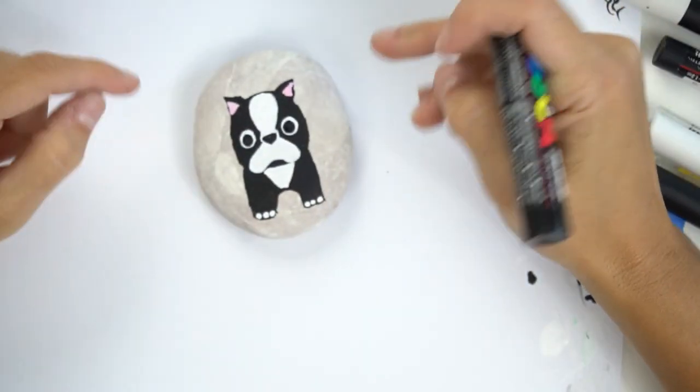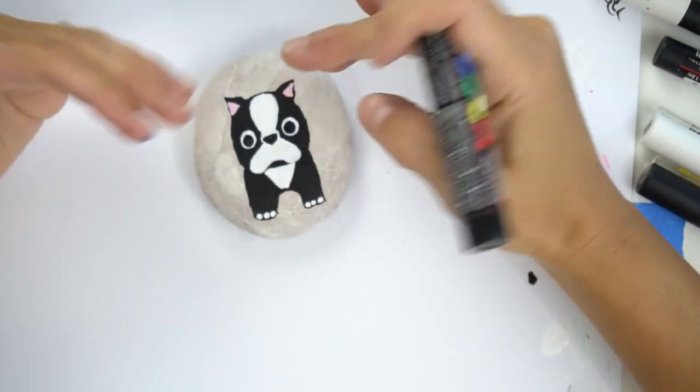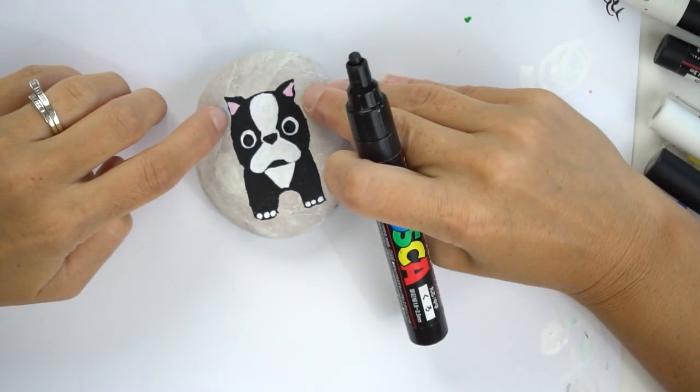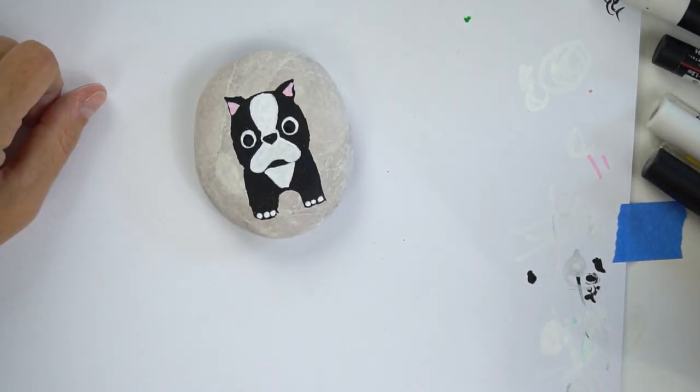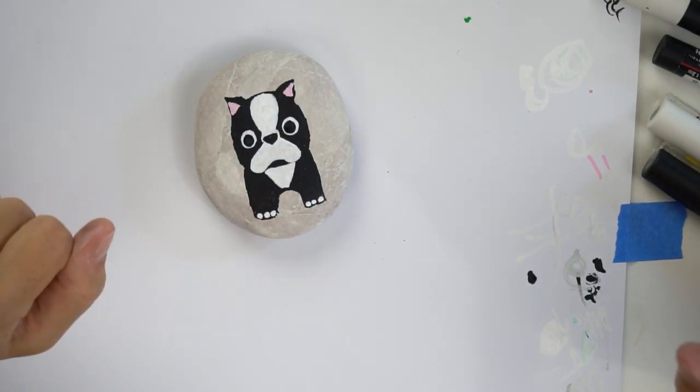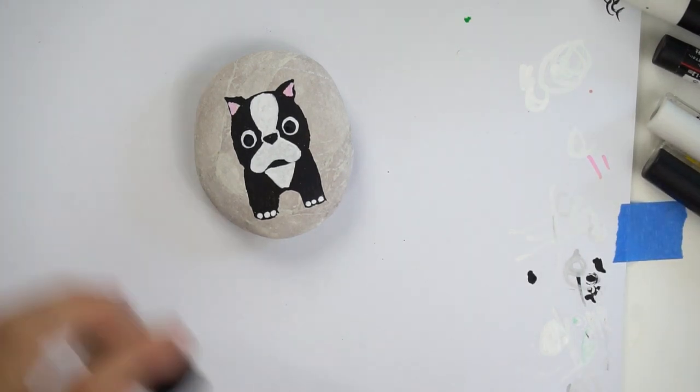I also went in and added a little bit more pink out to the edges because their ears kind of tend to go out. I wanted to give that appearance, so I just added a little more pink on the outside edge of both of those.